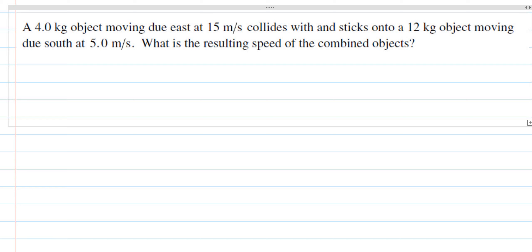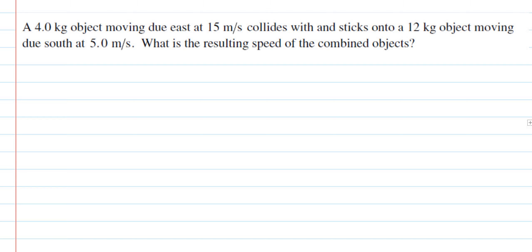In this video guide I'll cover some very basic collision questions. For this first problem, we have a 4 kilogram object moving due east at 15 meters per second, and it collides and sticks onto a 12 kilogram object moving due south at 5 meters per second. We want to figure out the resulting speed of the combined objects. Let's go ahead and start organizing our information.